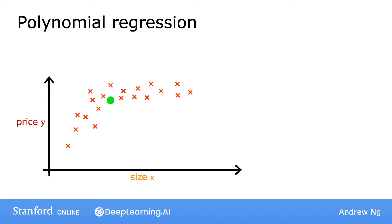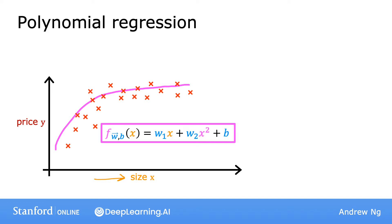Let's say you have a housing dataset that looks like this, where feature x is the size in square feet. It doesn't look like a straight line fits this dataset very well. So maybe you want to fit a curve, maybe a quadratic function to the data like this, which includes a size x and also x squared, which is the size raised to the power of 2. And maybe that will give you a better fit to the data.